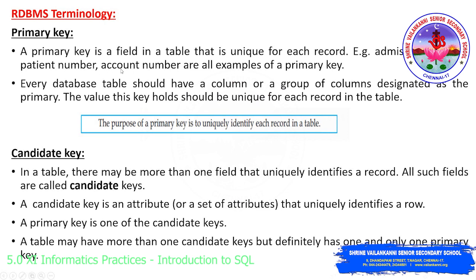Candidate key is the key which is capable of becoming the primary key. Even using the candidate key, we can uniquely identify a record in a table. For example, until a student gets a roll number, we use the admission number to recognize them — so the admission number acts like a primary key. Those kinds of keys are called candidate keys. A candidate key is an attribute or set of attributes that uniquely identifies a row. Primary key is also one of the candidate keys.